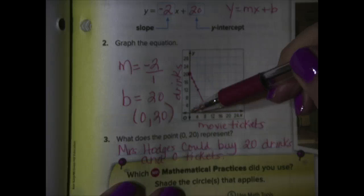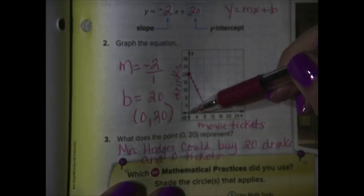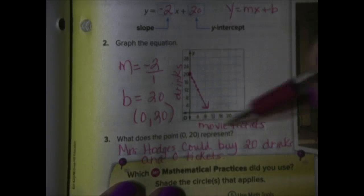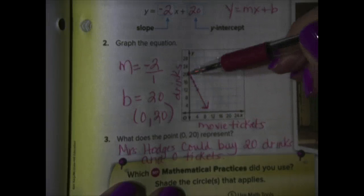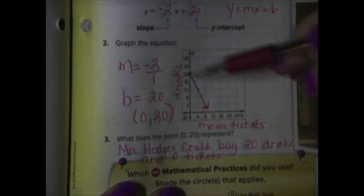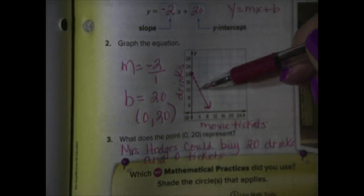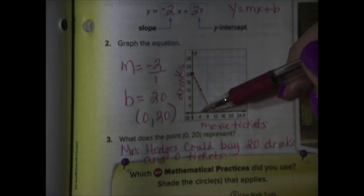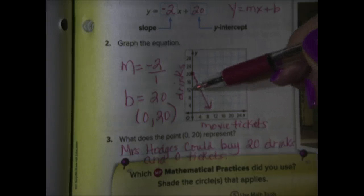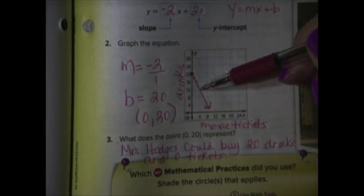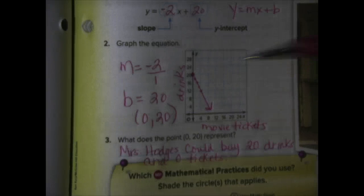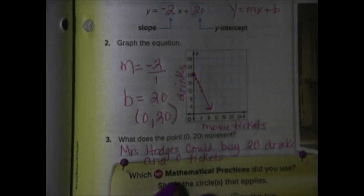So, you have to really pay attention to what they're telling us the variables are. So, at this point, we've bought how many movie tickets? We bought 0 movie tickets, right? And how many drinks have we bought? We bought 20. So, let's look to this point here. Here, we've bought how many movie tickets? 4 movie tickets. And how many drinks? 12 drinks. Okay. So, that's all it's asking us. So, let's go ahead and turn to page 210.